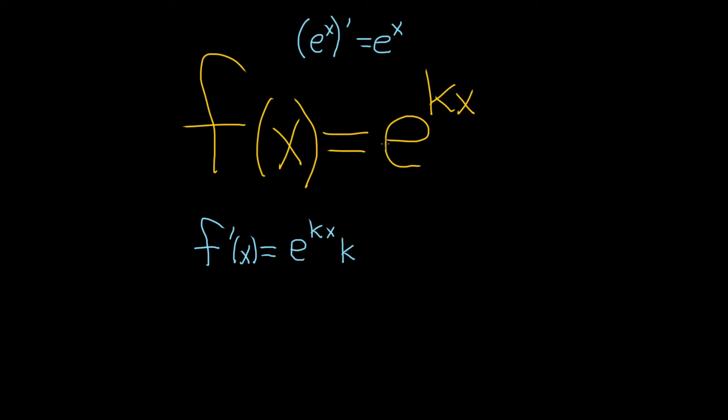Again, the derivative of e to the x is e to the x. So here, your outside function is e to the x, and your inside function is kx. The chain rule says you take the derivative of the outside, leave the inside untouched, and then times the derivative of the inside, which is k. This is k e to the kx.